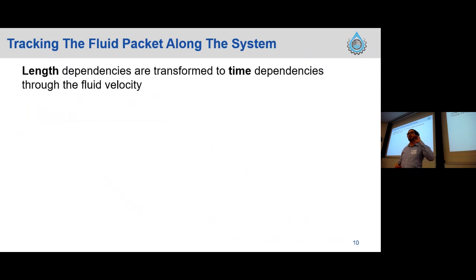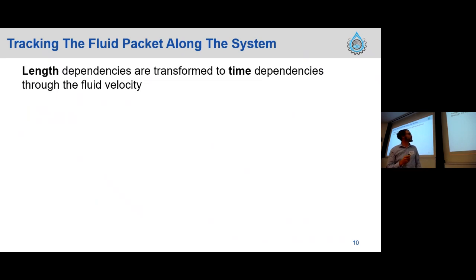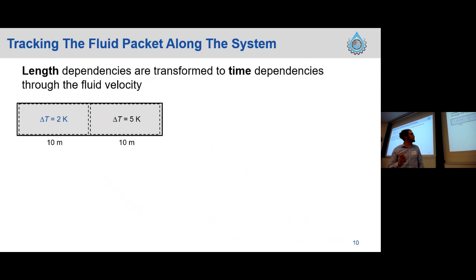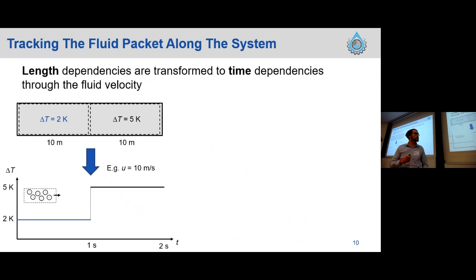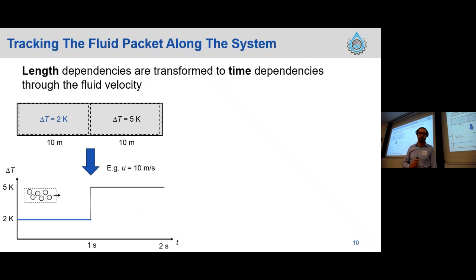When we go from a Eulerian to a Lagrangian approach, any length dependencies in our system become time dependencies. For example, if the system has variable subcooling along its length, the fluid packet will experience variable subcooling as a function of time, linked through the fluid velocity. To give an idea: say we have two control volumes of 10 meters each with two different subcoolings. If we know the fluid velocity, we can convert length to time dependencies — for the first second the packet experiences 2 Kelvin subcooling, for the next second it experiences 5 Kelvin subcooling.